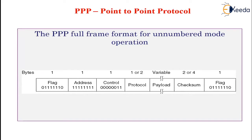PPP provides three important features. First, a framing method where the frame format also handles error detection. Second, a link control protocol (LCP) for bringing lines up, testing them, negotiating options, and bringing them down again gracefully when no longer needed. LCP supports synchronous and asynchronous circuits and byte-oriented as well as bit-oriented encodings. Third, a way to negotiate network layer options independently — a different NCP (network control protocol) is used for each network layer supported.